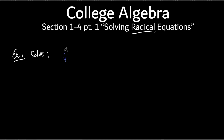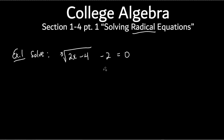The first one is not a square root, but it's actually a cube root. It's the cube root of 2x minus 4, then minus 2, equals 0. I'm going to go through these pretty quickly. You can always rewind and do the steps with me, then pause and go back if you need to.